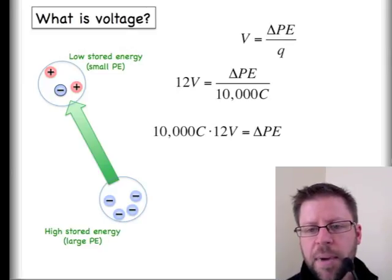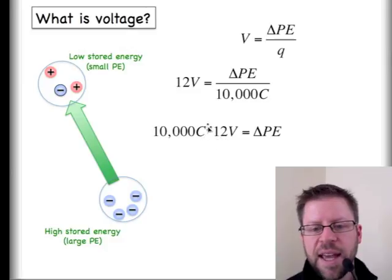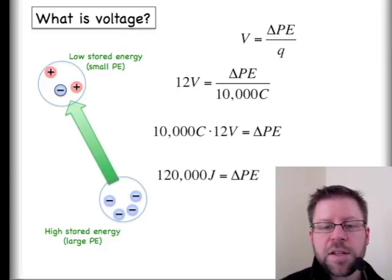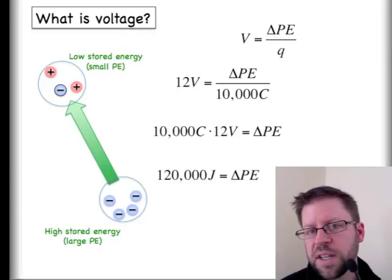If I want to know how much energy I can get out of this battery, I can finish up my multiplication. So move my denominator over to the left-hand side, multiply those numbers together. Notice that my alternate units for volts were joules per coulomb, so there's a coulomb in the denominator that would cancel with this coulomb unit over here, and I just have 10,000 times 12, and I would have a leftover joule unit in the numerator. So that leaves me with 120,000 joules of energy that I could get out of this particular battery.